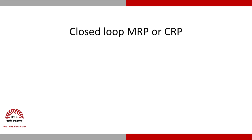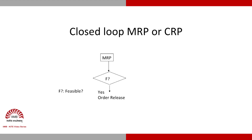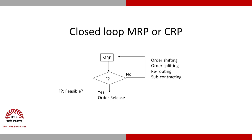This is shown as closed-loop MRP or CRP. We begin with MRP, but the output as order schedules is not directly passed to the shop floor. Instead, they are checked for capacity feasibility. Feasibility means ensuring that for each work center and each time period the load and capacity balance favorably. If not feasible, feedback is given back to the MRP system — actions in the feedback loop include shifting, splitting, rerouting, or subcontracting.